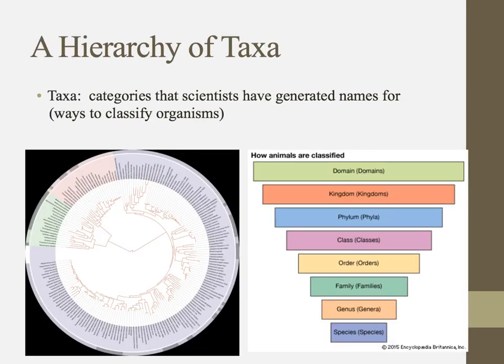We use the genus and species — those two most specific levels of classification. Those levels of classification are what we call taxa (plural), or taxon (singular). These are categories that scientists use to generate names of organisms and to place them into classification groups.